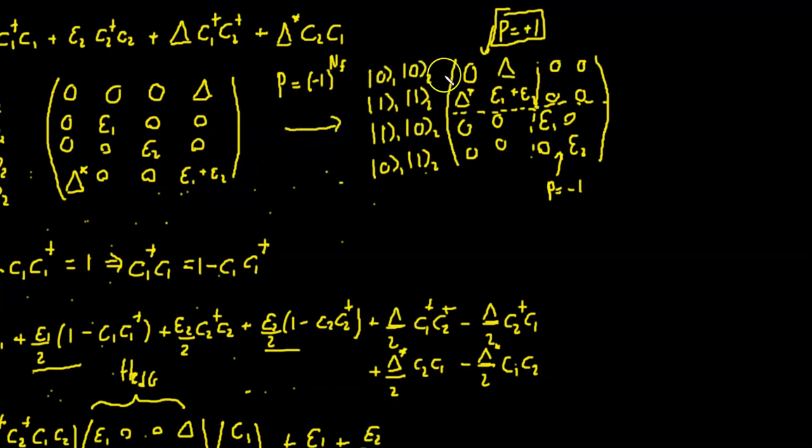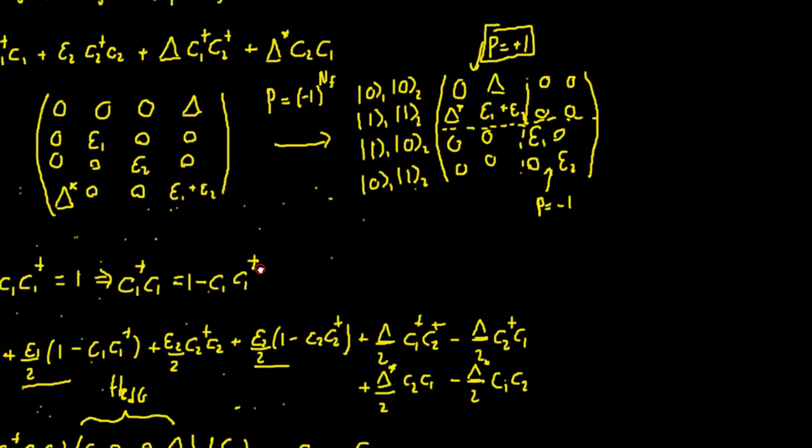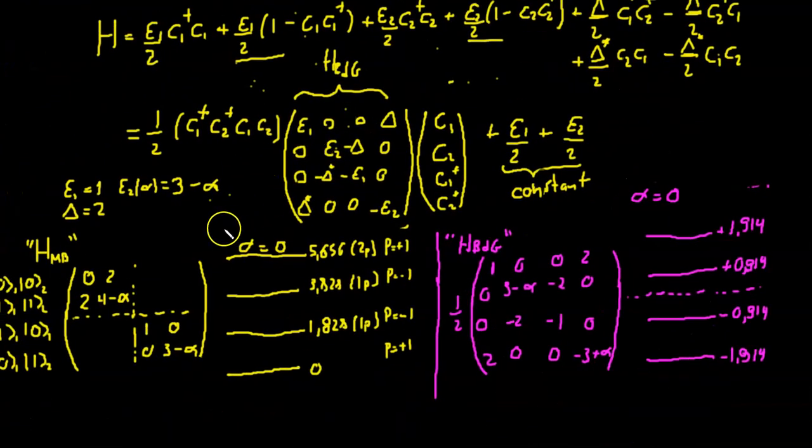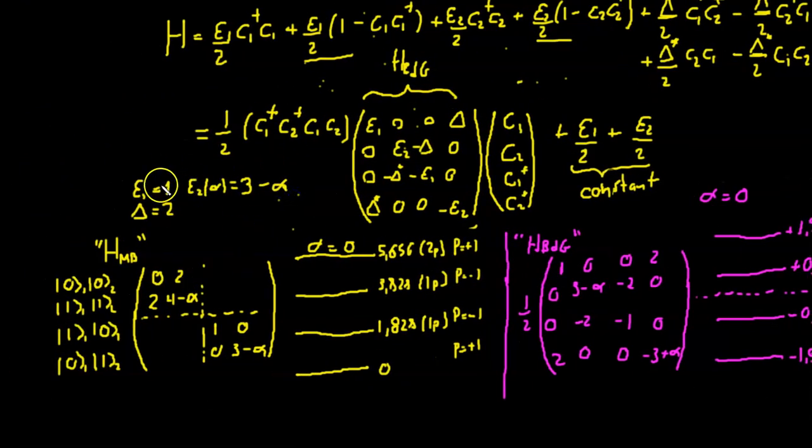So where each state has a well-defined parity in terms of that definition. And we chose numbers like epsilon one equals one, epsilon two is three as a function of a parameter alpha. And we plugged delta to be real equals to two. And just from this, we got the excitation spectrum.